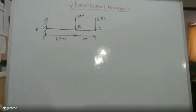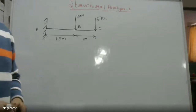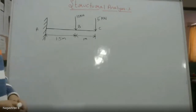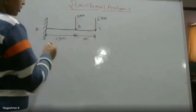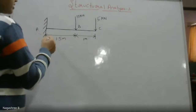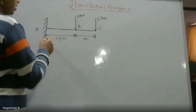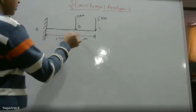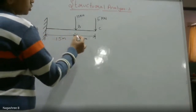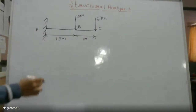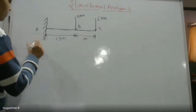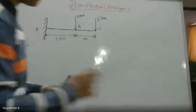Today I'll be discussing a numerical of a cantilever beam when it is subjected to concentrated loads. I have two concentrated loads here — one is 10 kN and another is 5 kN. The span distance between A and B is 1.5 meters, and the span between B and C is 1 meter. The total length of the beam is given as 2.5 meters.